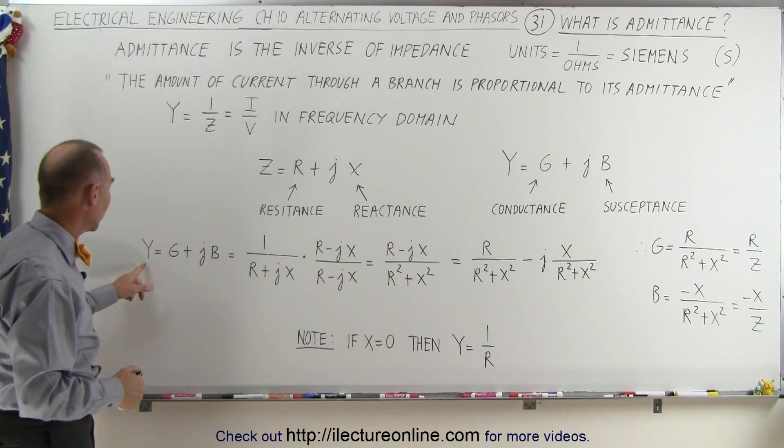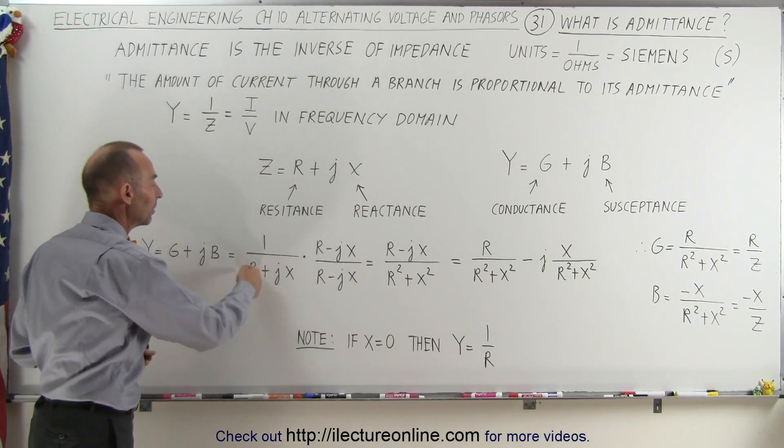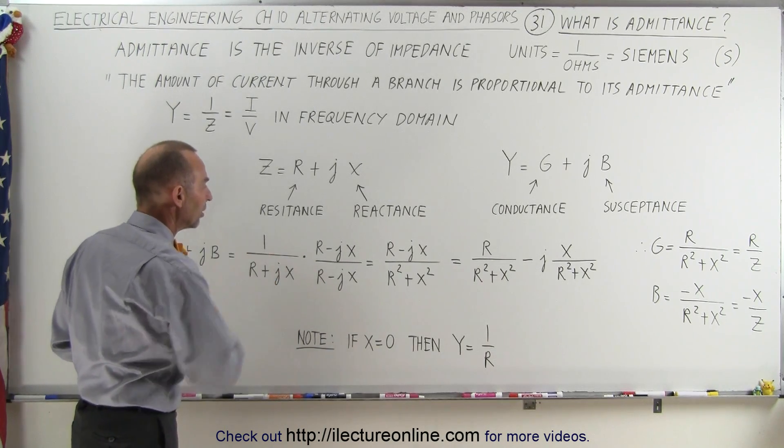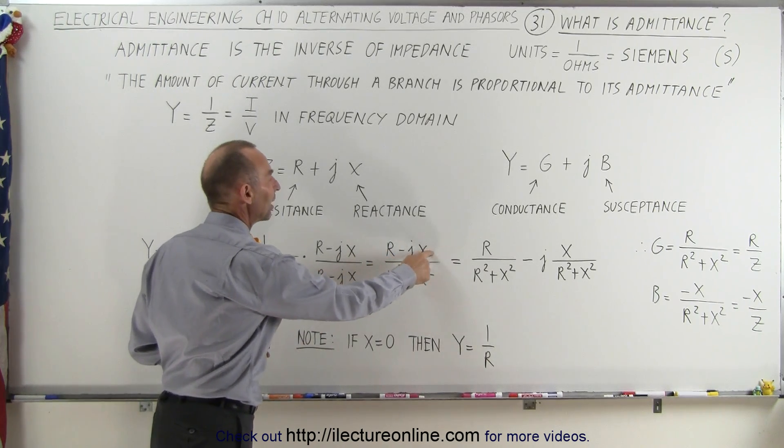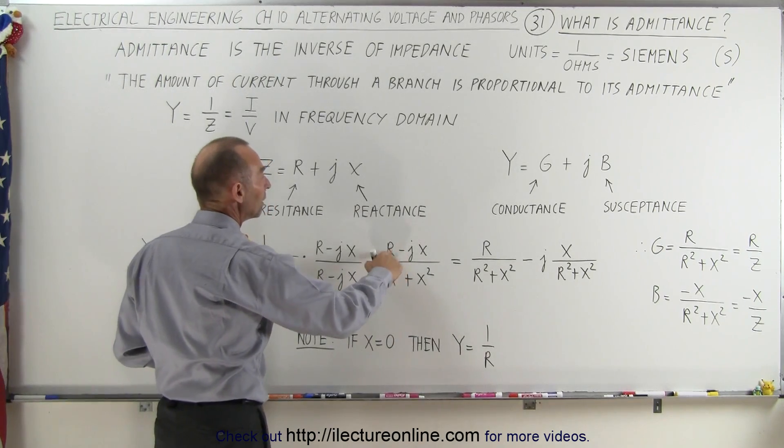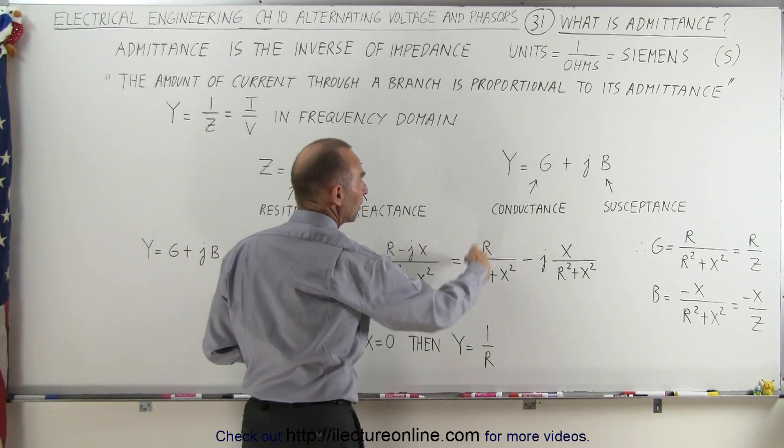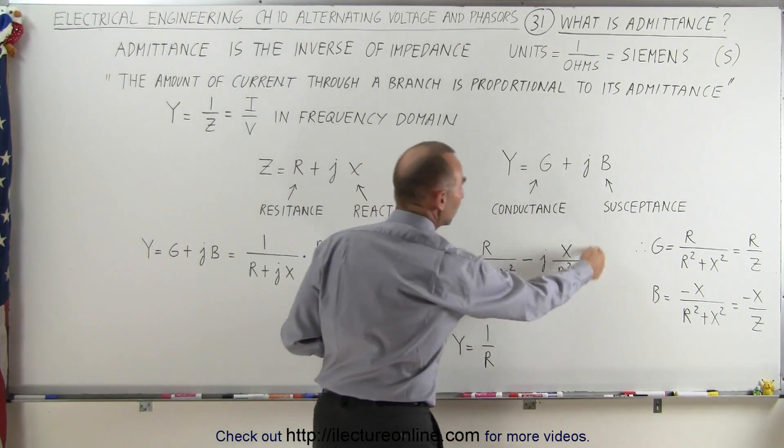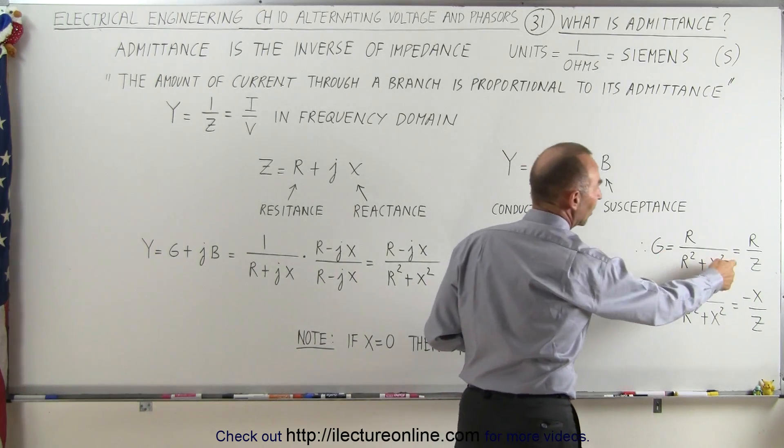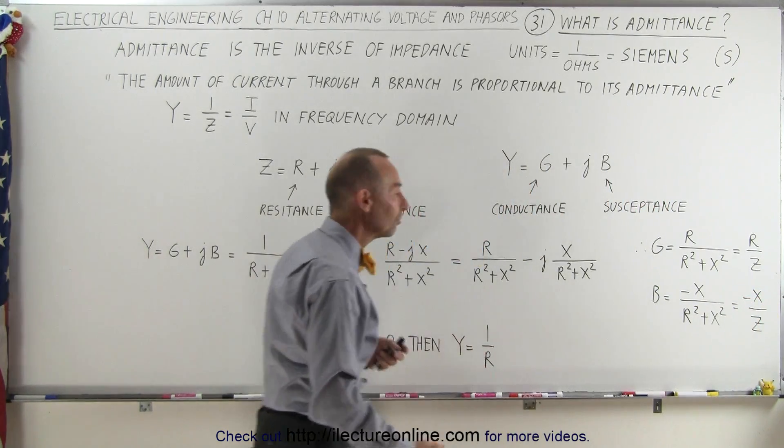Starting with the equation that admittance equals the conductance plus J times the susceptance, that equals one over Z, and Z can be written as R plus JX. If we write both the numerator and denominator as the complex conjugate of the denominator to get rid of the J, notice we end up with R minus J times X divided by R squared plus X squared. Separating that into the real part and the imaginary part, this here would be the conductance, and this part with the negative sign would be the susceptance. The conductance can be written as the resistance over the impedance, and the susceptance as the negative of the reactance over the impedance.